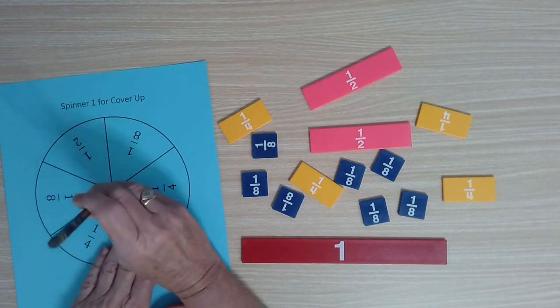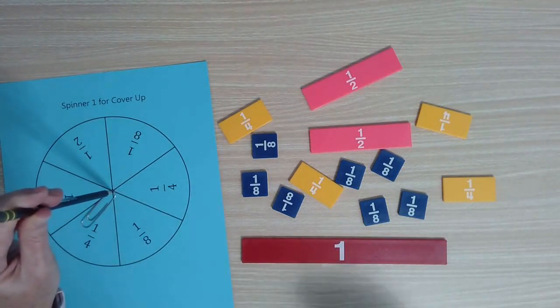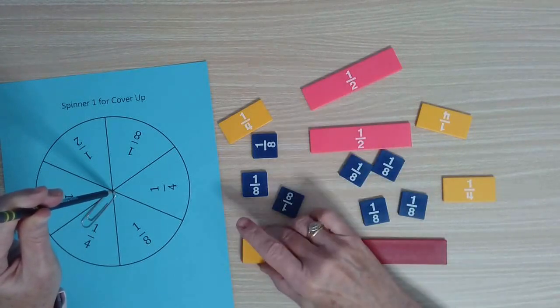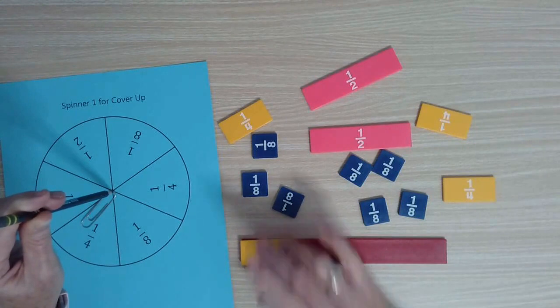The first thing I'm going to do is spin the spinner, and I get one-fourth. So I'm covering my whole, I put the one-fourth right on top of the whole.